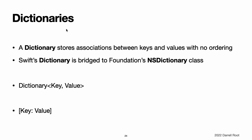Dictionaries. A dictionary stores associations between keys of the same type and values of the same type in a collection with no defined ordering. Each value is associated with a unique key, which acts as an identifier for that value within the dictionary. Unlike items in an array, items in a dictionary do not have a specified order. You use a dictionary when you need to look up values based on their identifier, much the same way that a real-world dictionary is used to look up the definition for a particular word. Note: Swift's dictionary type is bridged to Foundation's NSDictionary class. For more information about using dictionary with Foundation and Cocoa, see Bridging Between Dictionary and NSDictionary.